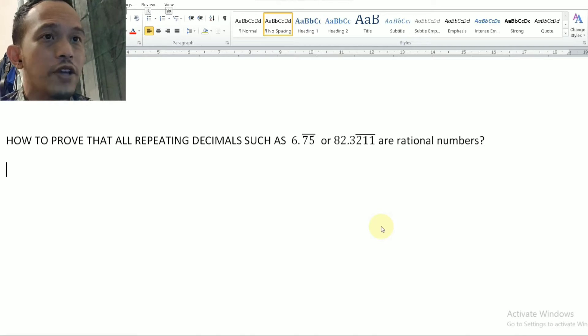For proving this, I use two premises. The first premise is that all repeating decimals can be expressed into the ratio of two integers. The second premise is that all numbers that can be expressed into the ratio of two integers are rational numbers.